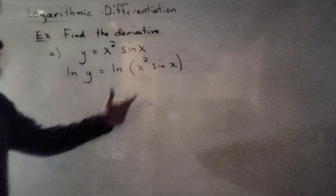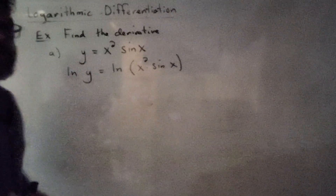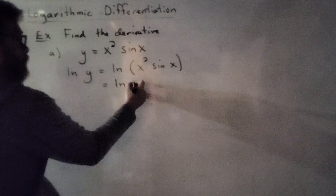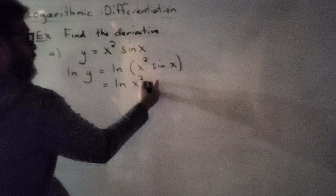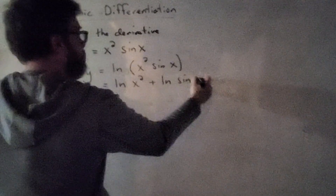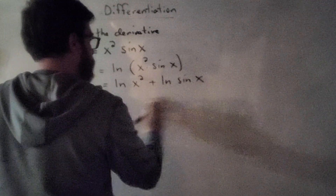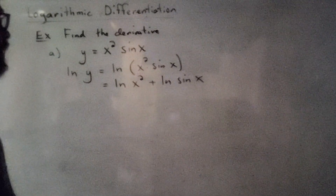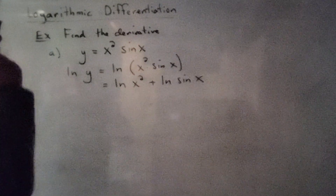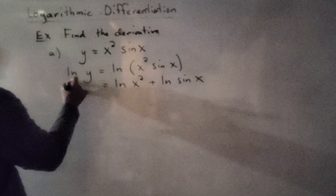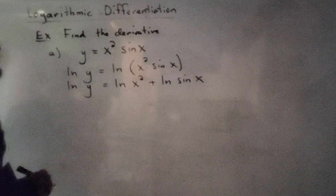On the right-hand side, we have the logarithm of a product, which means we can expand this to be the natural log of x squared plus the natural log of sine of x. So far, no calculus yet — all we did is take the natural log of both sides and simplify the right-hand side.